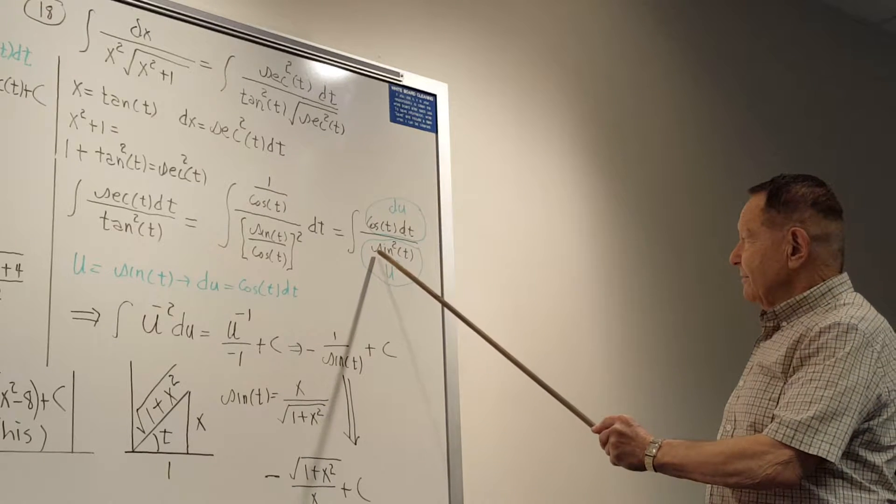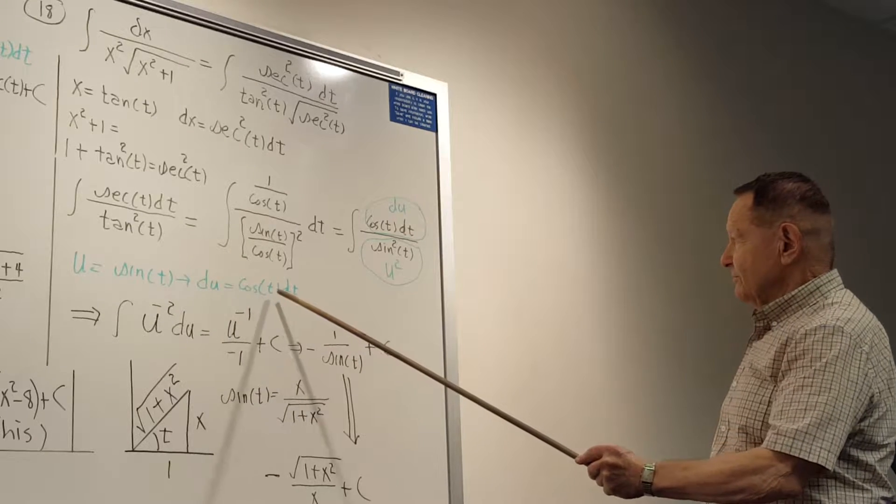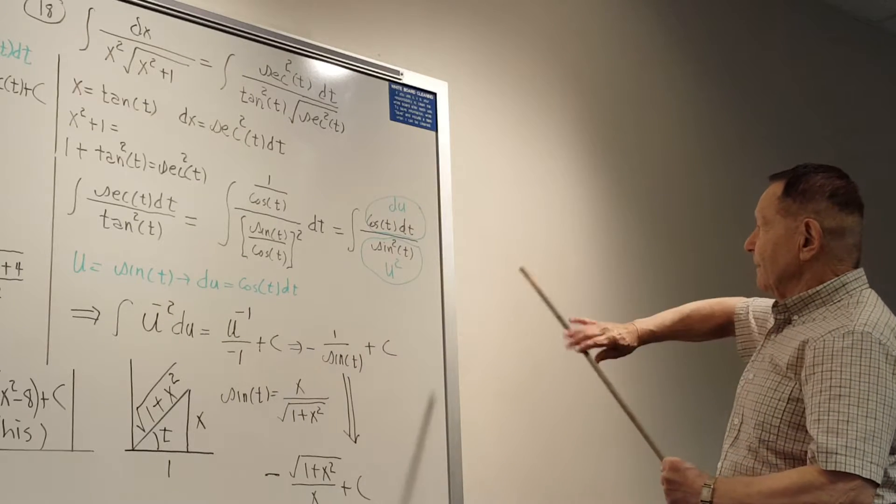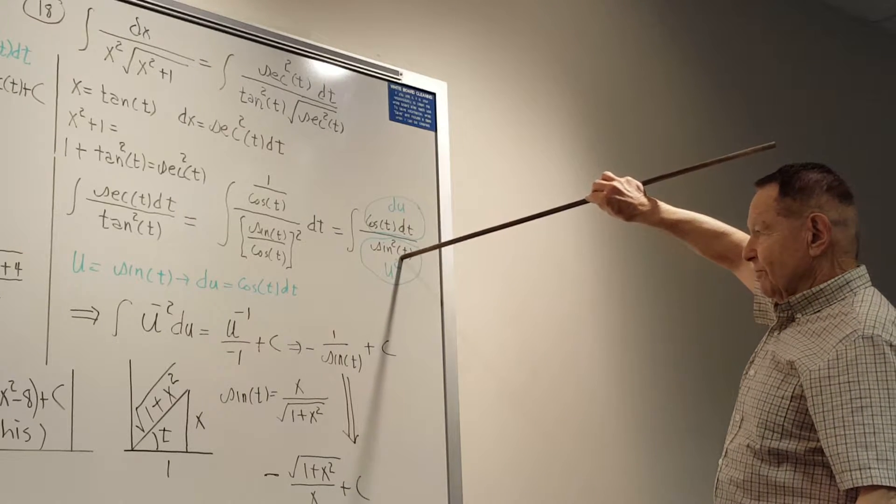So then if you let u be sine, the du is cosine t dt. So this becomes du over u squared.